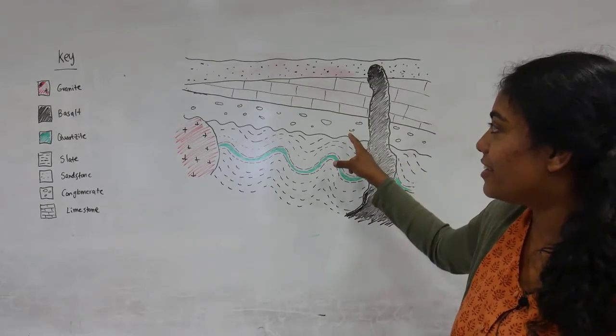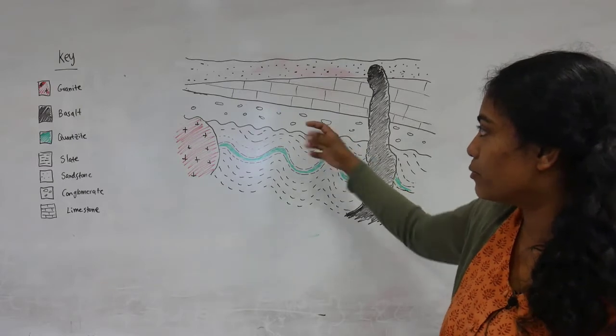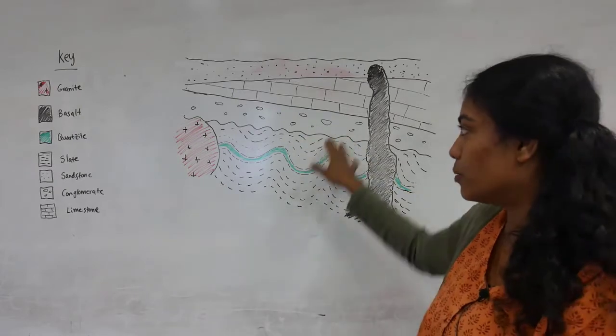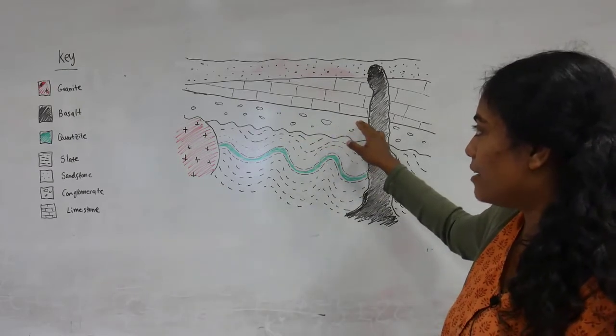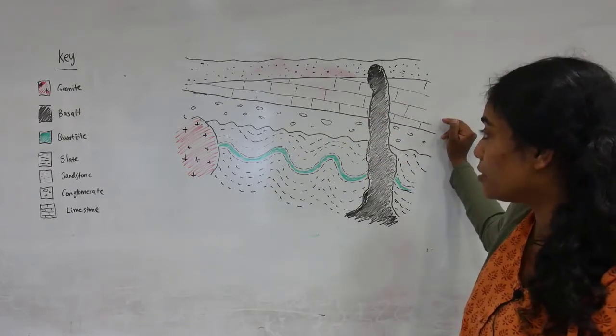After that we would have had the deposition of these round clasts which form the conglomerate, and the deposition of calcium carbonate material which would have formed the limestone.